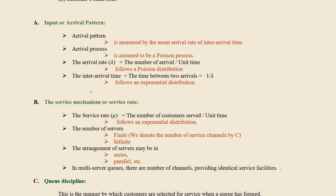The second characteristic is service mechanism — that is, how customers receive service and in what manner. The service rate is denoted as mu, and the formula for the service rate is measured by the number of customers serviced per unit time. It follows an exponential distribution. The number of servers may be finite or infinite; if finite, it is denoted by C.